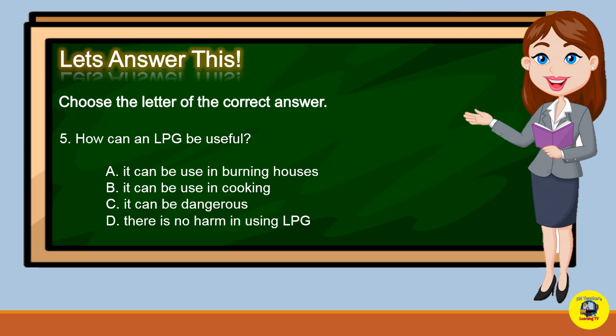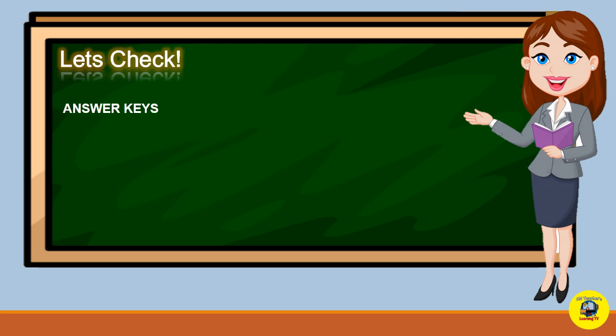Number 5: How can an LPG be useful? A. It can be used in burning houses. B. It can be used in cooking. C. It can be dangerous. Or D. There is no harm in using LPG.